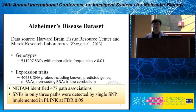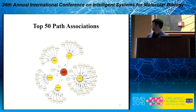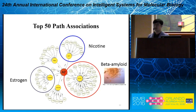Here is the top 50 path associations found by NITAM in the Alzheimer's disease dataset. In this graph, the smallest circle represents a SNP, the mid-sized circle represents a gene expression trait, and the largest circle represents Alzheimer's disease status. Interestingly, three clusters are related to the nicotine pathway, beta-amyloid pathway, and estrogen pathway — all of which have been extensively studied in Alzheimer's disease research communities.